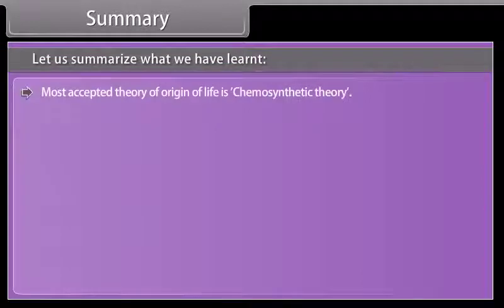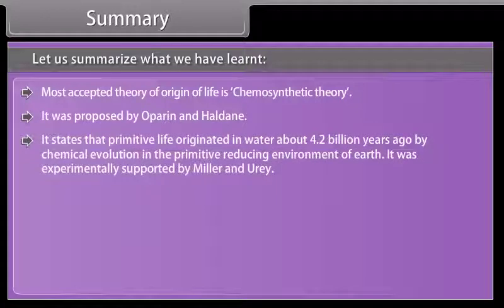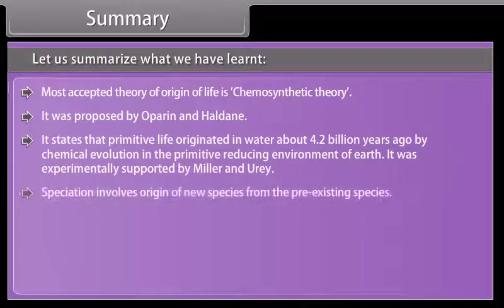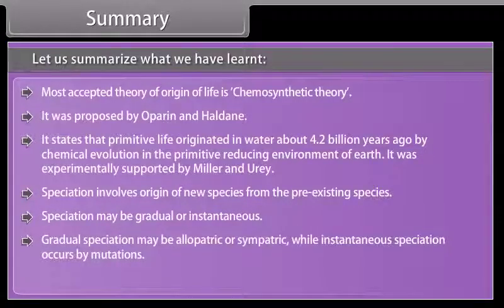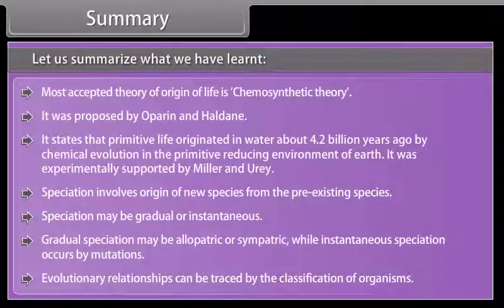Charles Darwin proposed theory of natural selection for organic evolution. He proposed that only useful continuous variations help in evolution and natural selection selects only the best adapted individuals from a heterogeneous population. Most accepted theory of origin of life is chemosynthetic theory. It was proposed by Oparin and Haldane. It states that primitive life originated in water about 4.2 billion years ago by chemical evolution in the primitive reducing environment of earth. It was experimentally supported by Miller and Urey. Speciation involves origin of new species from pre-existing species. Speciation may be gradual or instantaneous. Gradual speciation may be allopatric or sympatric while instantaneous speciation occurs by mutations.